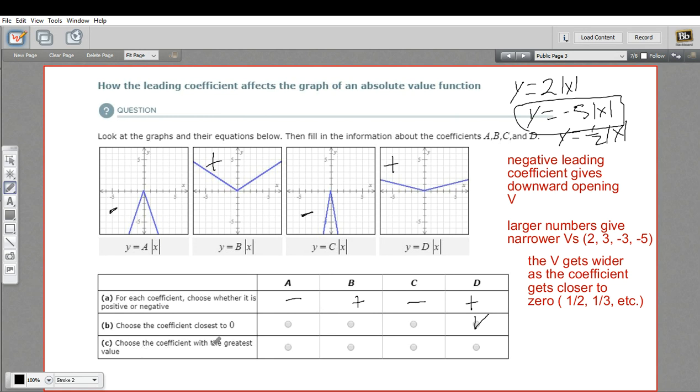And then Part C says, choose the coefficient with the greatest value. What I said was that the narrower it is, the bigger the number part is. But we have to be careful here. They're saying greatest. This is negative, and this is negative.